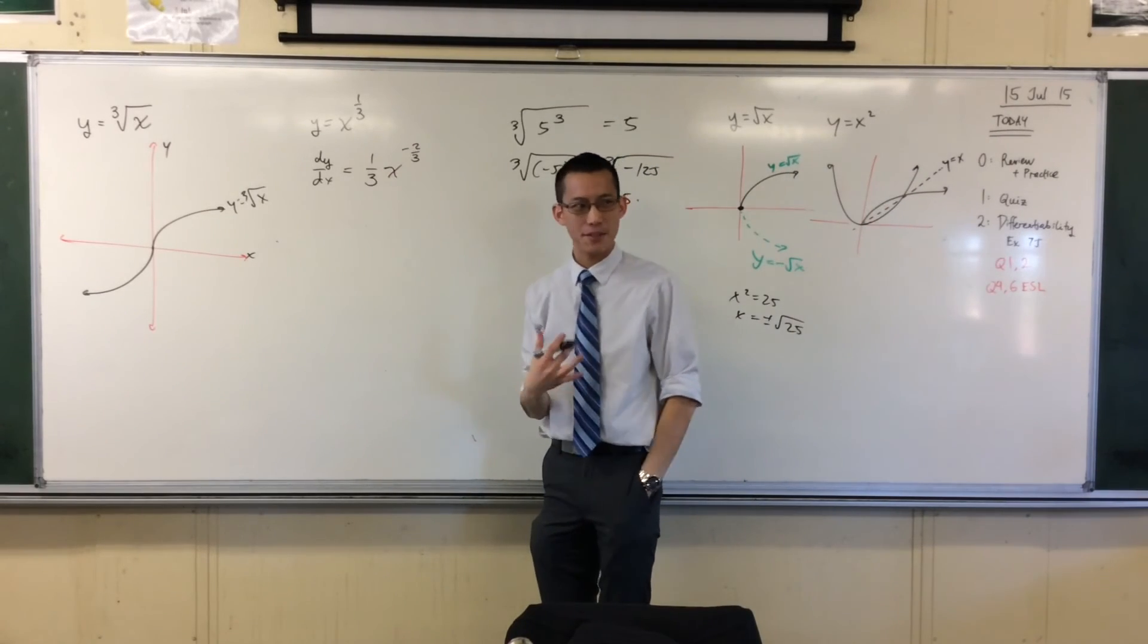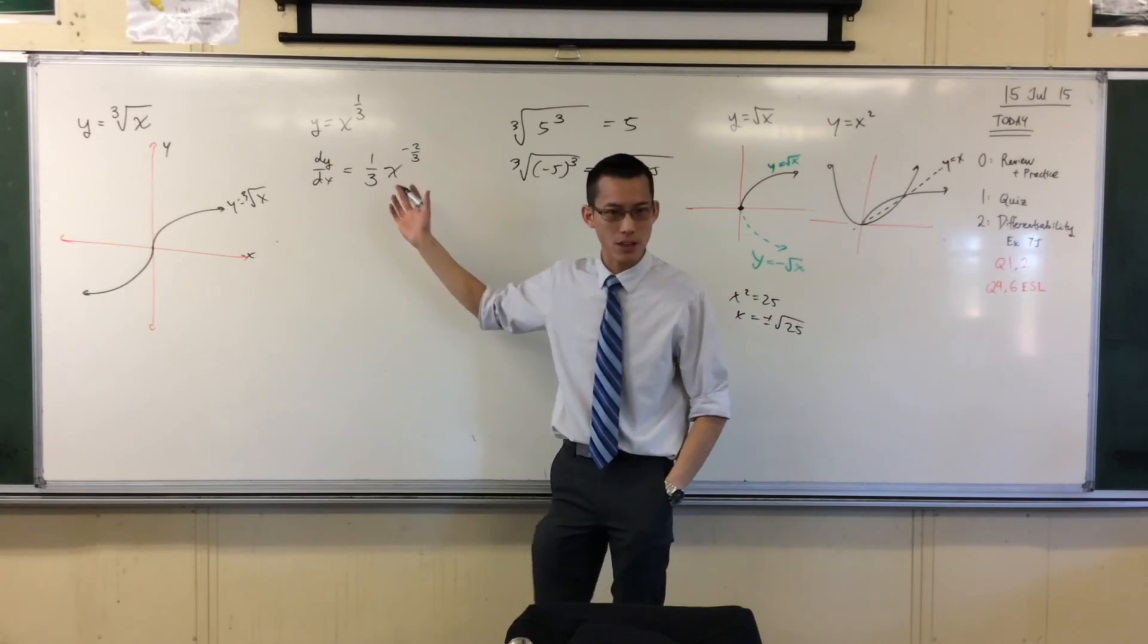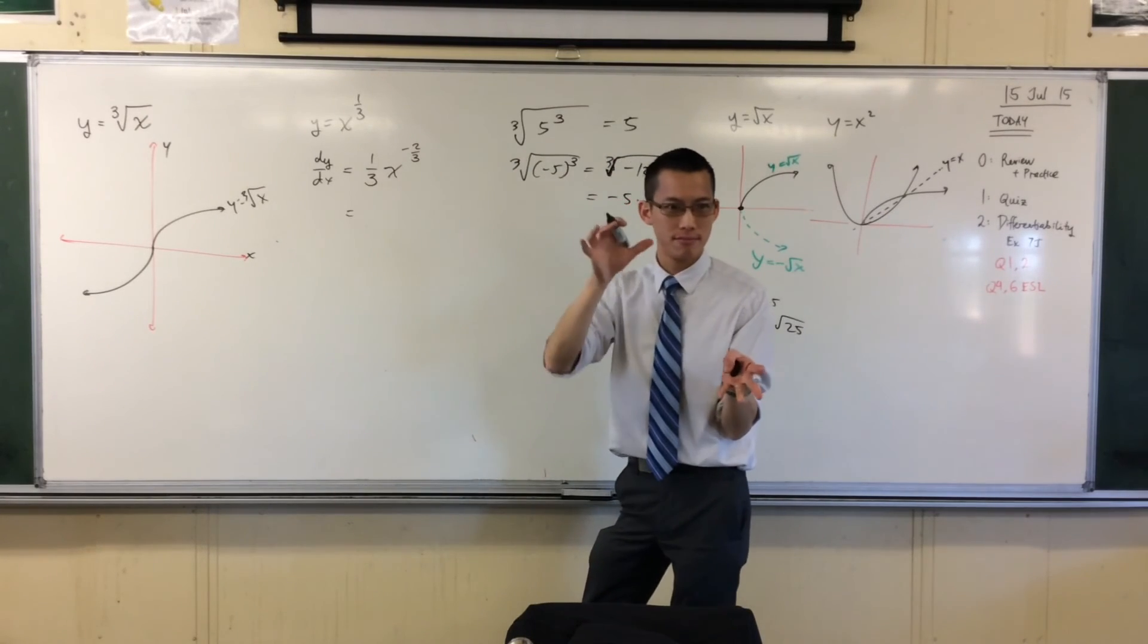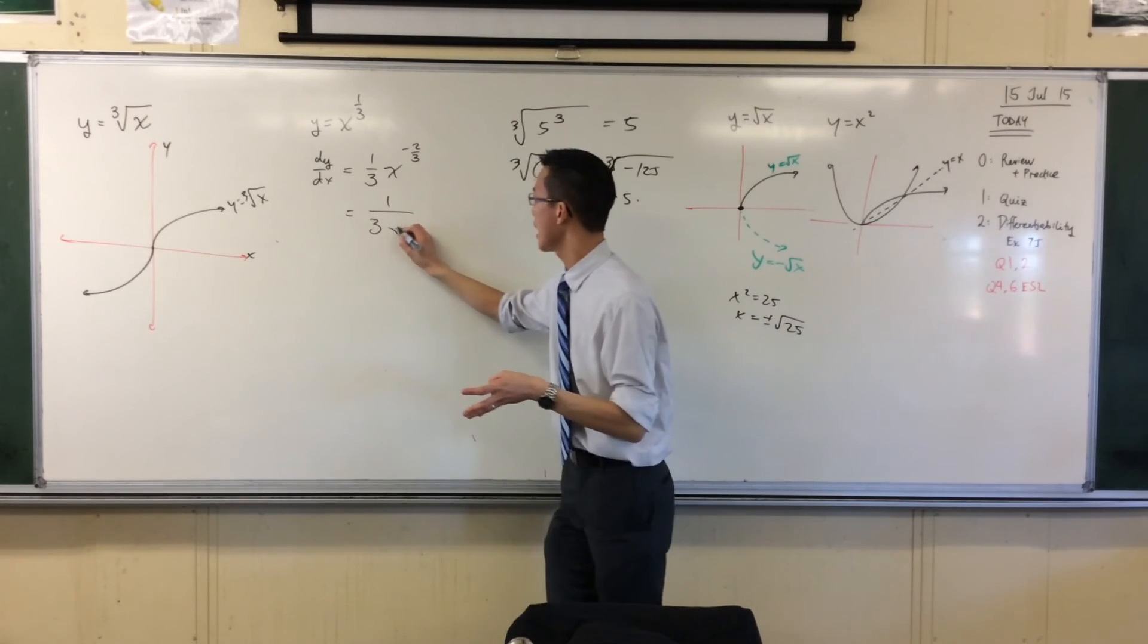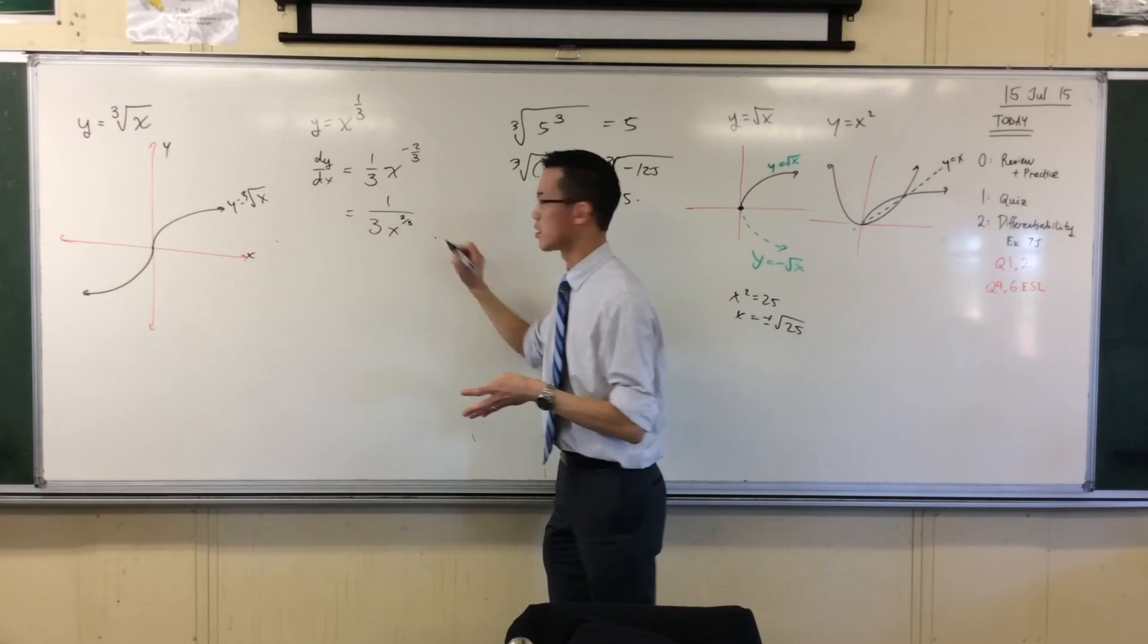Now, this, because there's a negative in the index, what does that mean about the whole thing? It goes to the bottom. Yeah, it's on the denominator. So this is really one over three x to the two thirds.